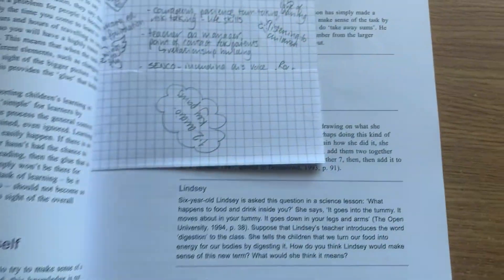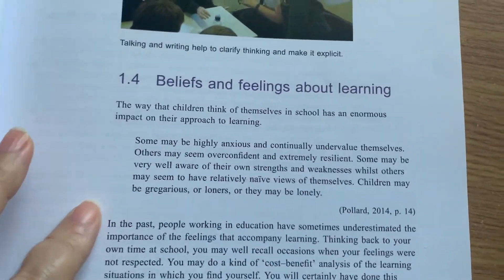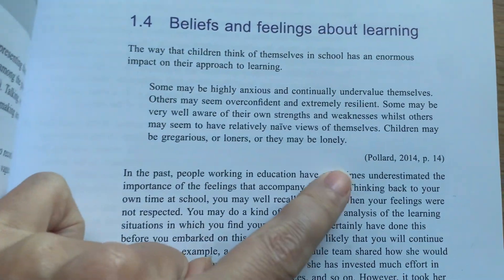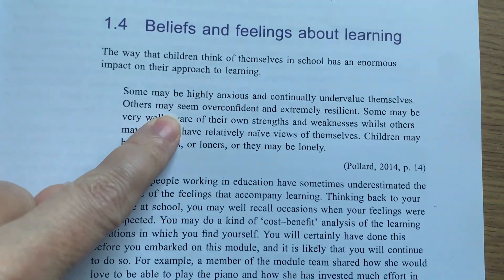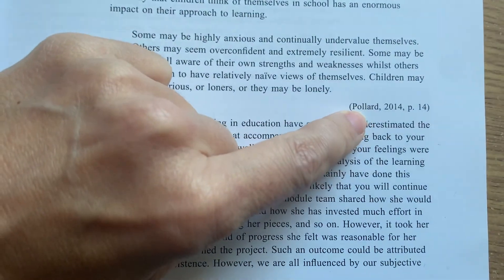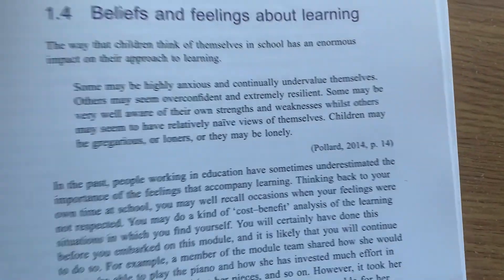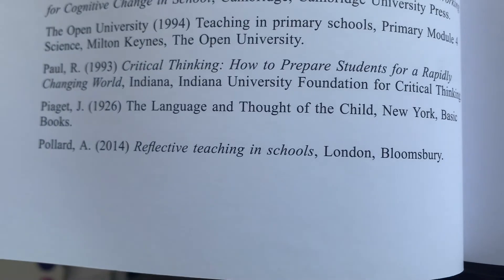If you look in the study topic — going back to study topic three — you can see there's referencing evidence there too. Here's a direct quotation from Pollard. In the text they've given the information about that piece of work, and at the end of the study topic you can see they've got a reference list. That Pollard quote is backed up with information in the reference list.